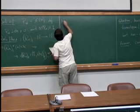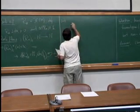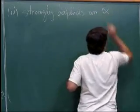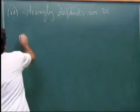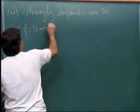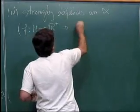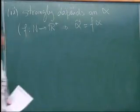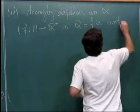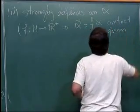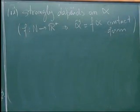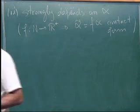The second point is that the Reeb flow strongly depends on the choice of contact form alpha. Recall that if you have a positive function f, you can multiply your original contact form by it to get another contact form for the same contact structure, and the Reeb flow of f·alpha can be completely different from the Reeb flow for alpha.